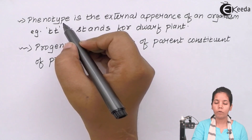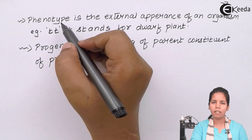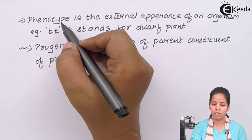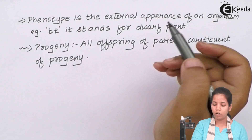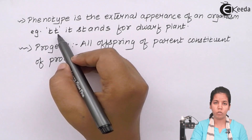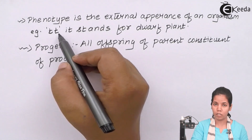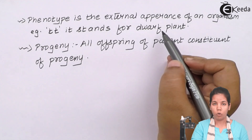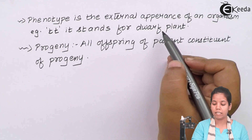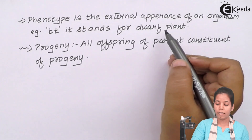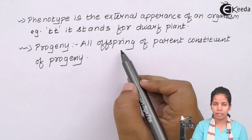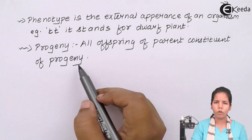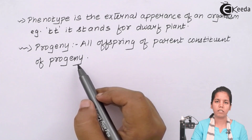Let's talk about phenotype. Phenotype is nothing but external appearances of an organism. For example, if the genotypic makeup of a dwarf plant is small t small t, then its phenotypic look — the way it looks — is that the plant will be dwarf or short-heighted. Lastly, progeny: all offsprings of parents constitute progeny, or we can say daughters or children are termed as progenies.